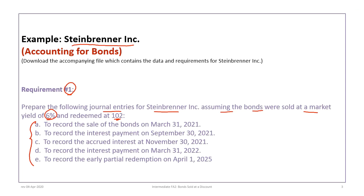We're going to record the sale of the bonds on March 31st, 2021; an interest payment on September 30th; an interest accrual at the intervening year end of November 30th; another interest payment on March 31st, 2022; and then the final early redemption on April 1st, 2025. It looks like a lot, but this will actually go fairly quickly.